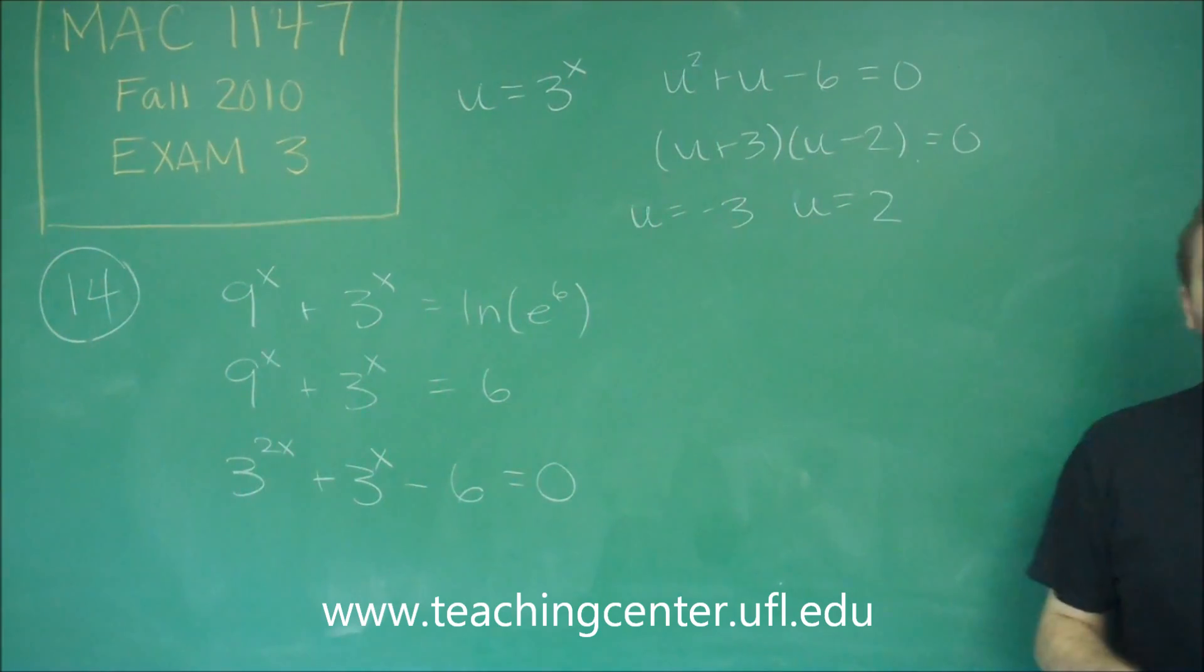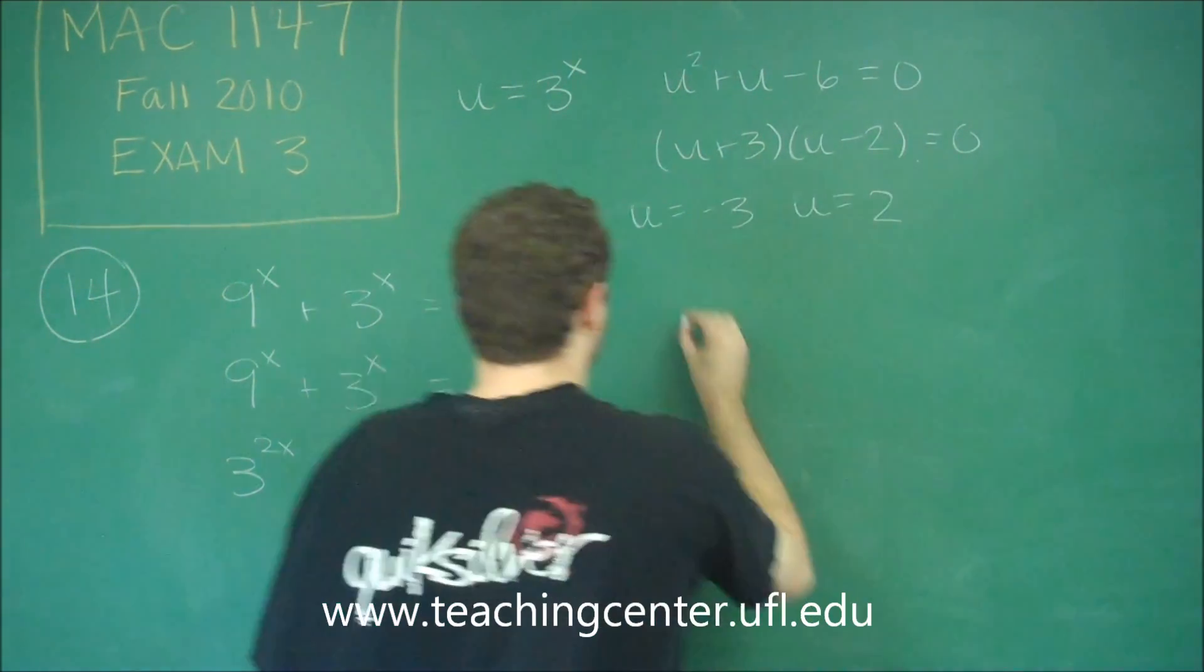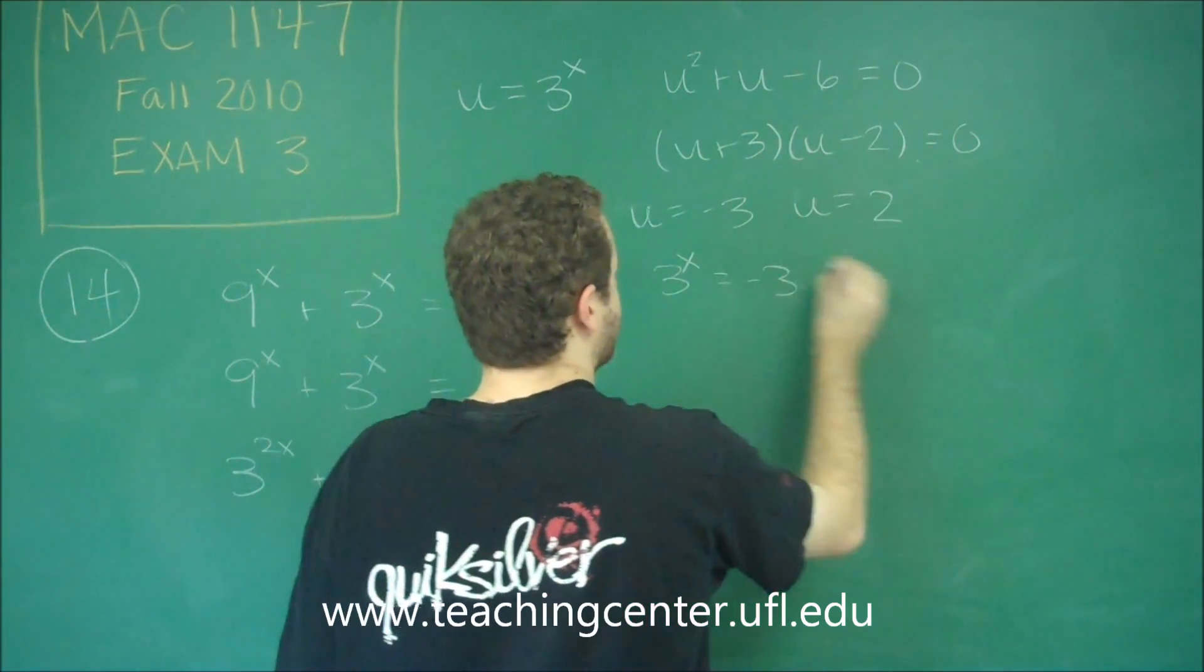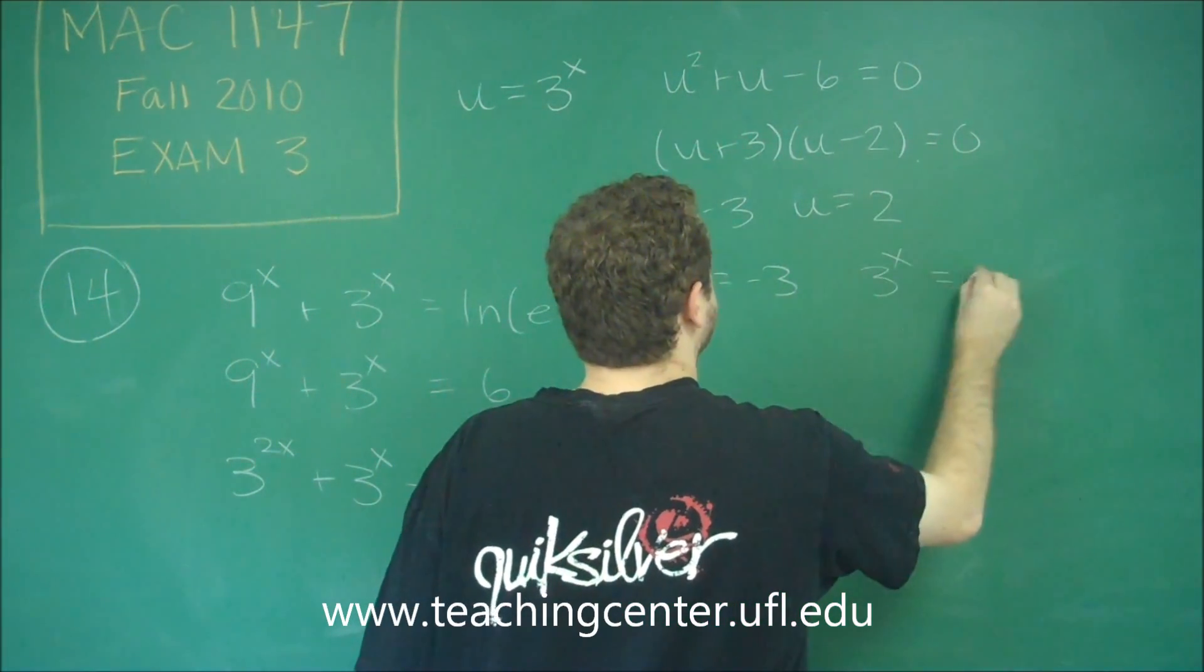So remember that once you get to this point you need to put back in what you had originally called u. So we get 3^x = -3, or 3^x = 2.